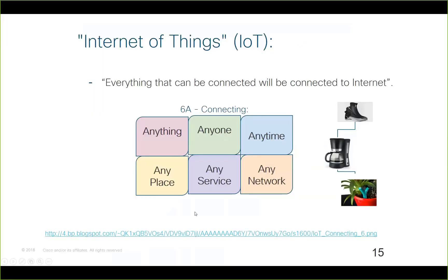Internet of Things is a term that encompasses a network where everything that can be connected will be connected to the Internet. That includes the 6A: anything, anyone, any time, any place, any service, any network. This means we are going to connect heterogeneous devices — devices with constraints, devices with different kinds of power processing, or devices powered by battery. Internet of Things means you can connect constrained devices because they are cheap, enabling common everyday things to connect to the Internet at a low price.